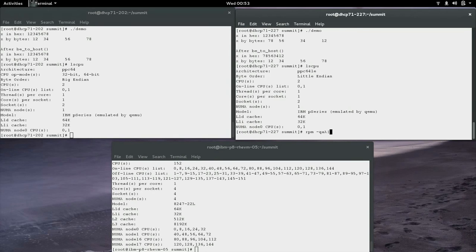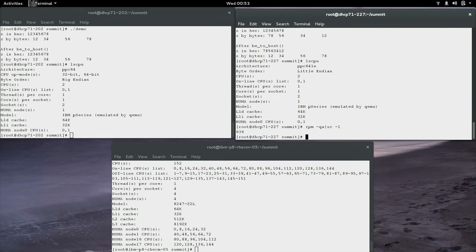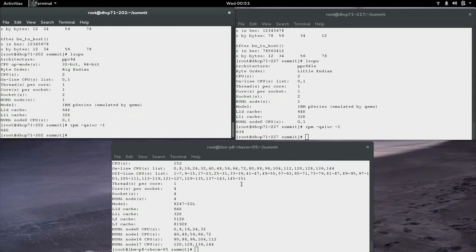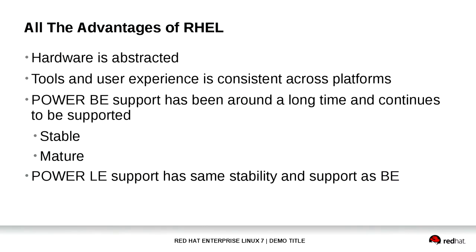Now let's compare packages on both guests. As we can see, the package count is nearly identical, with Big Endian hosting a few more packages. This is RHEL — everything is the same: the packages, the tools, the interface. We focus on abstracting the hardware so the user experience is consistent on whatever hardware you invest in.